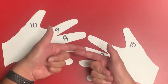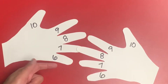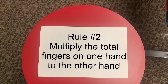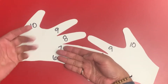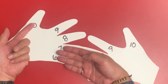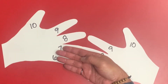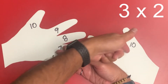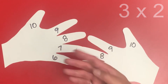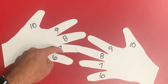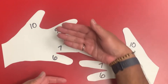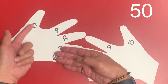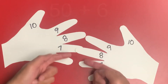So 7 times 8 — those two joined fingers and the ones below, you count as 10: 10, 20, 30, 40, 50. The second rule is the fingers that are above the joined fingers — you multiply the fingers of the left hand with the fingers of the right hand. So in this example, 7 times 8, you would do 3 times 2, which is 6. So putting it all together, 7 times 8 is equal to 50 plus 3 times 2. 7 times 8 is 56.